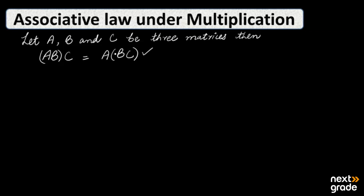The statement of the associative law will be: (AB)C equals A(BC). We will discuss this using three matrices.